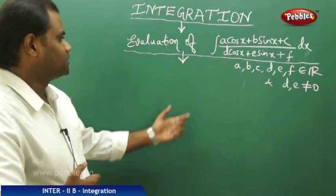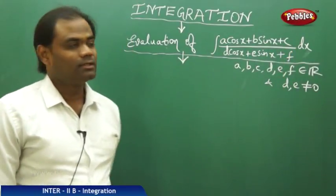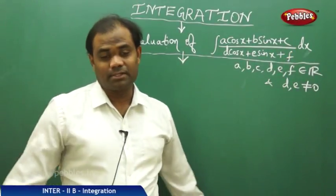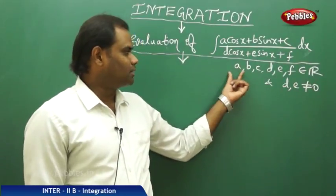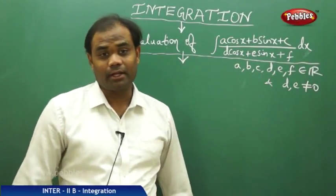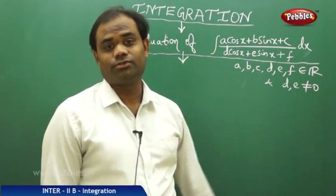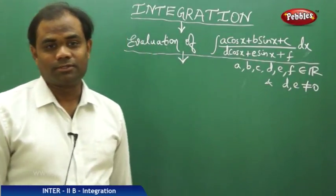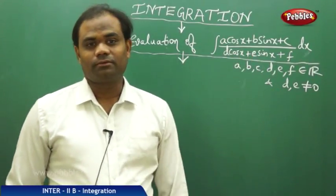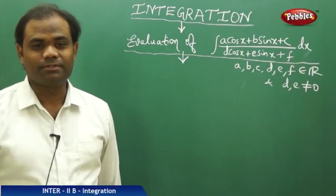Now let us evaluate the integral of (a·cos x + b·sin x + c) / (d·cos x + e·sin x + f), where the condition is that each of a, b, c, d, e, and f are real numbers and d and e are non-zero, because if d and e are zero then the whole denominator vanishes and the simplification becomes easier.